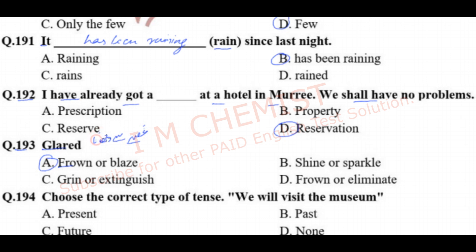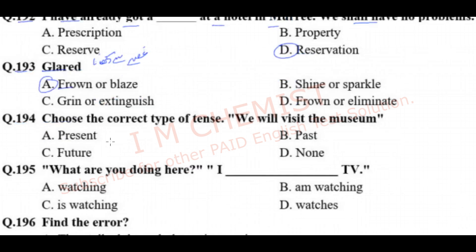Question number 194: choose the correct type of tense — 'We will visit the museum.' You can see the word 'will' here. 'Will' and 'shall' indicate that the sentence is in future tense.